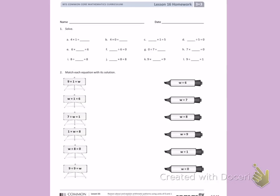Number 1, solve. Today we learned that anything times 1 equals the other number. So when I look at A and I see 4 times 1, I have 4 groups with 1 in each group. When I count those up, I have 4.